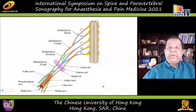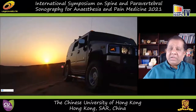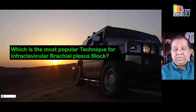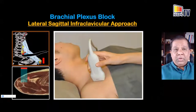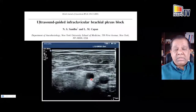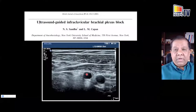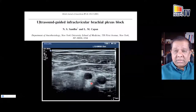The costoclavicular brachial plexus block is a proximal infraclavicular brachial plexus block targeting the cords of the brachial plexus at the costoclavicular space. The most popular infraclavicular technique is the lateral sagittal infraclavicular brachial plexus block, where you perform a sagittal scan at the lateral infraclavicular fossa, visualizing the cords underlying the pec major and minor muscle, with the second part of the axillary artery visible.